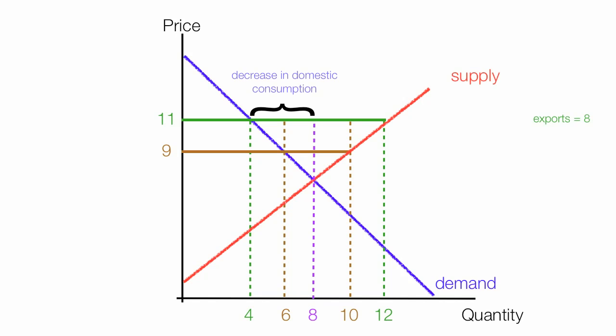The decrease in domestic quantity is the equilibrium quantity (which is 8) minus the domestic quantity after the new export price, and that equals 4. So the decrease in domestic consumption is equal to 4 units. And that should do it for this topic.